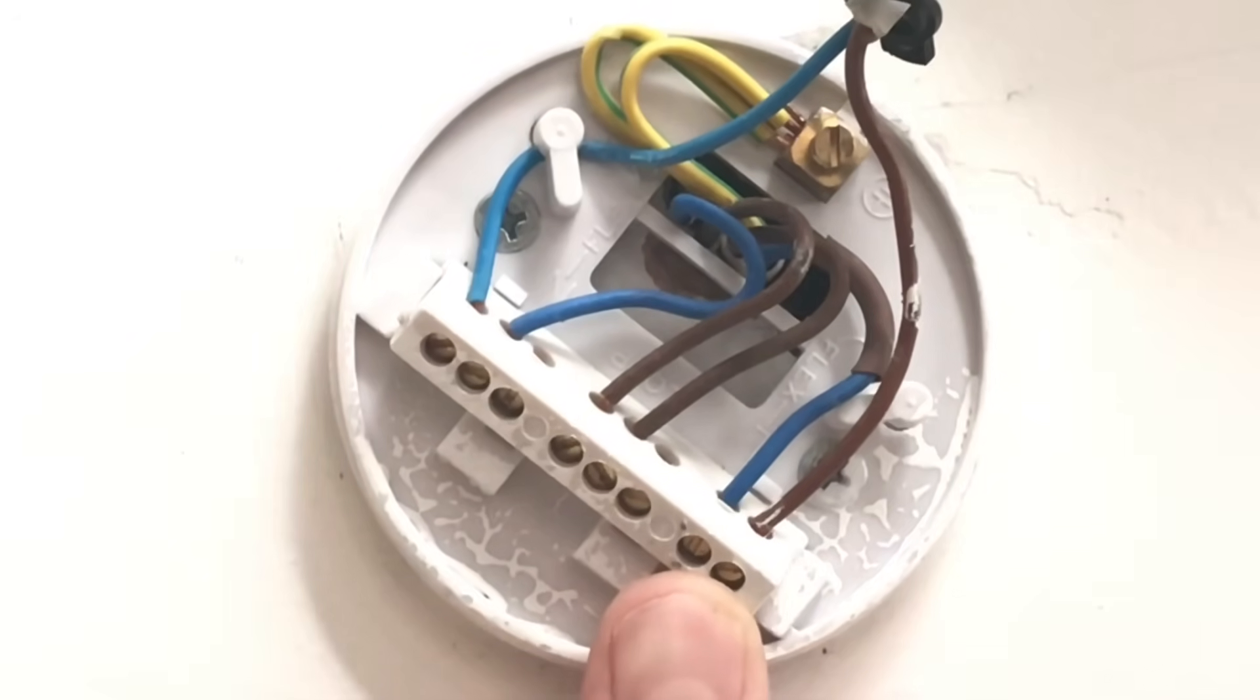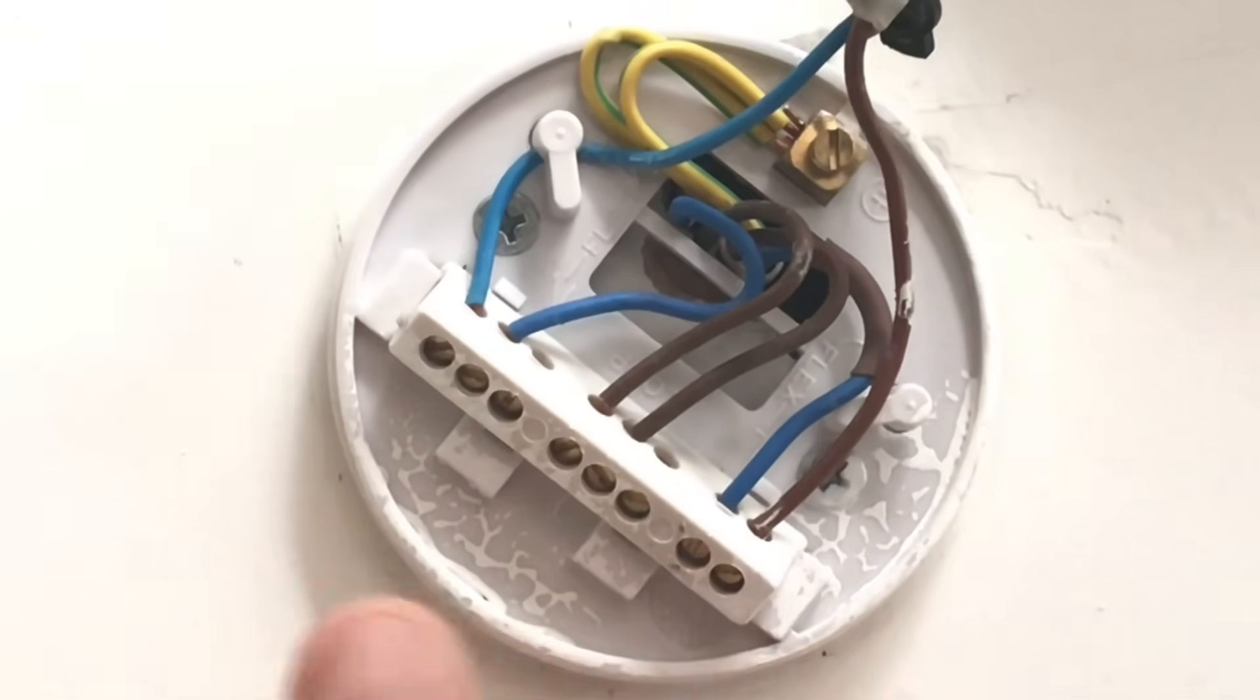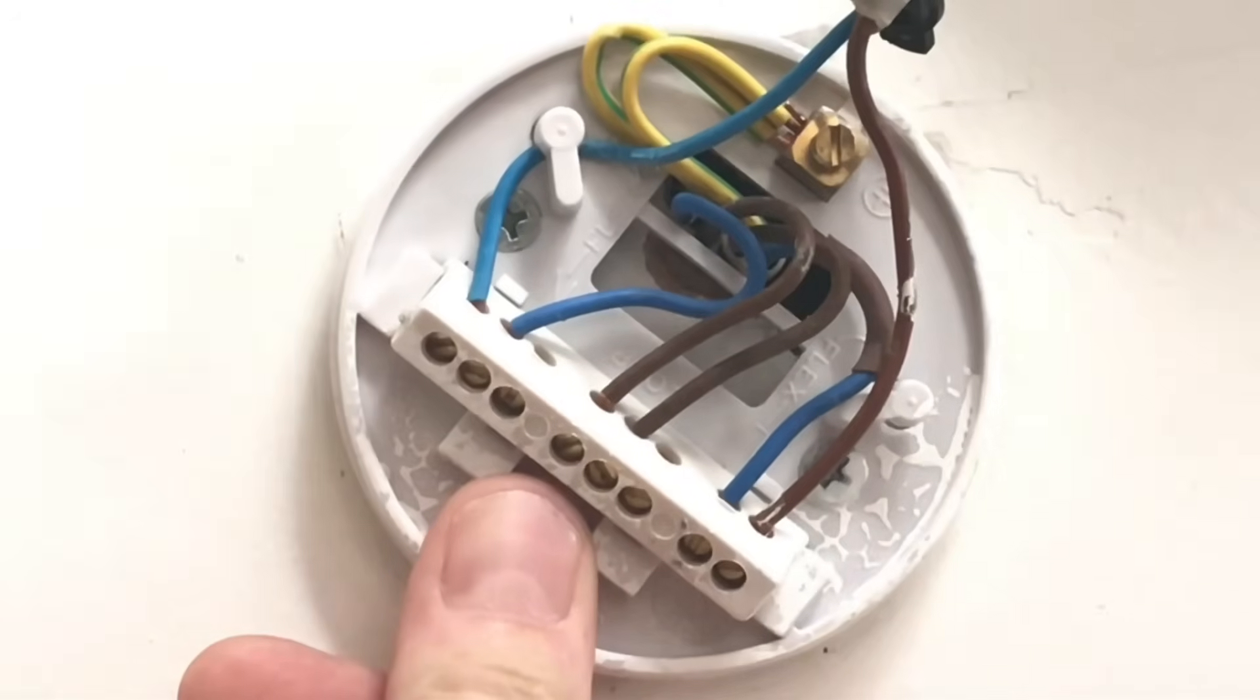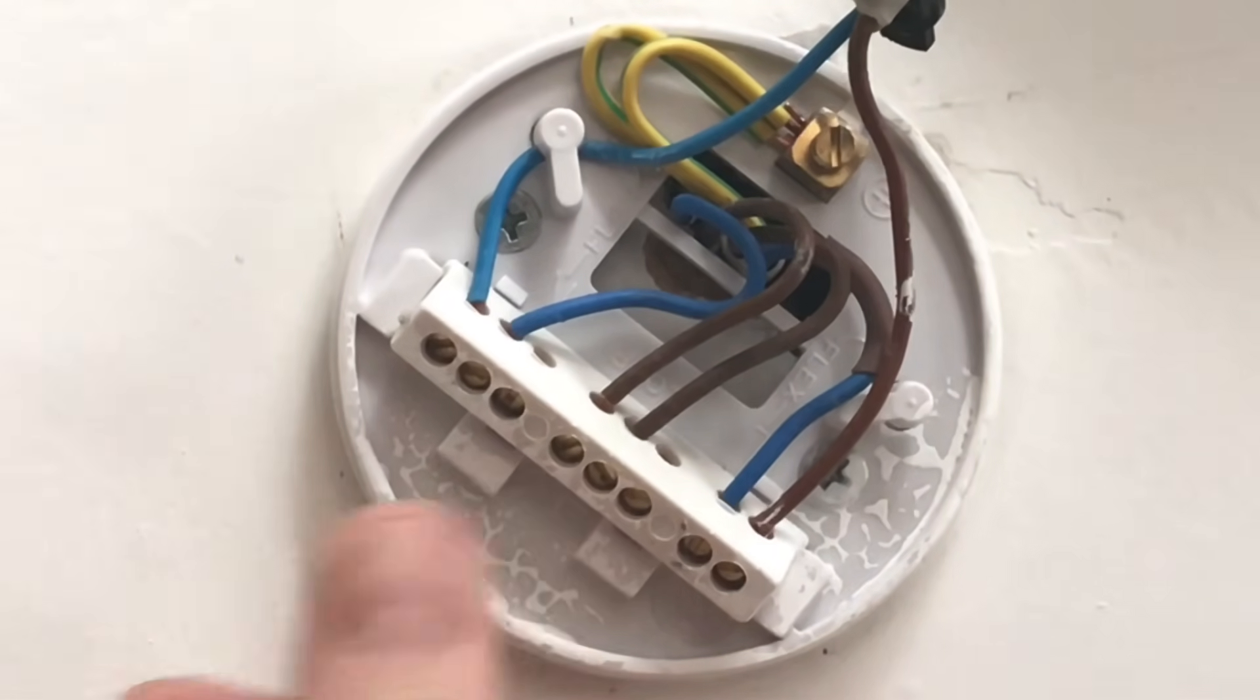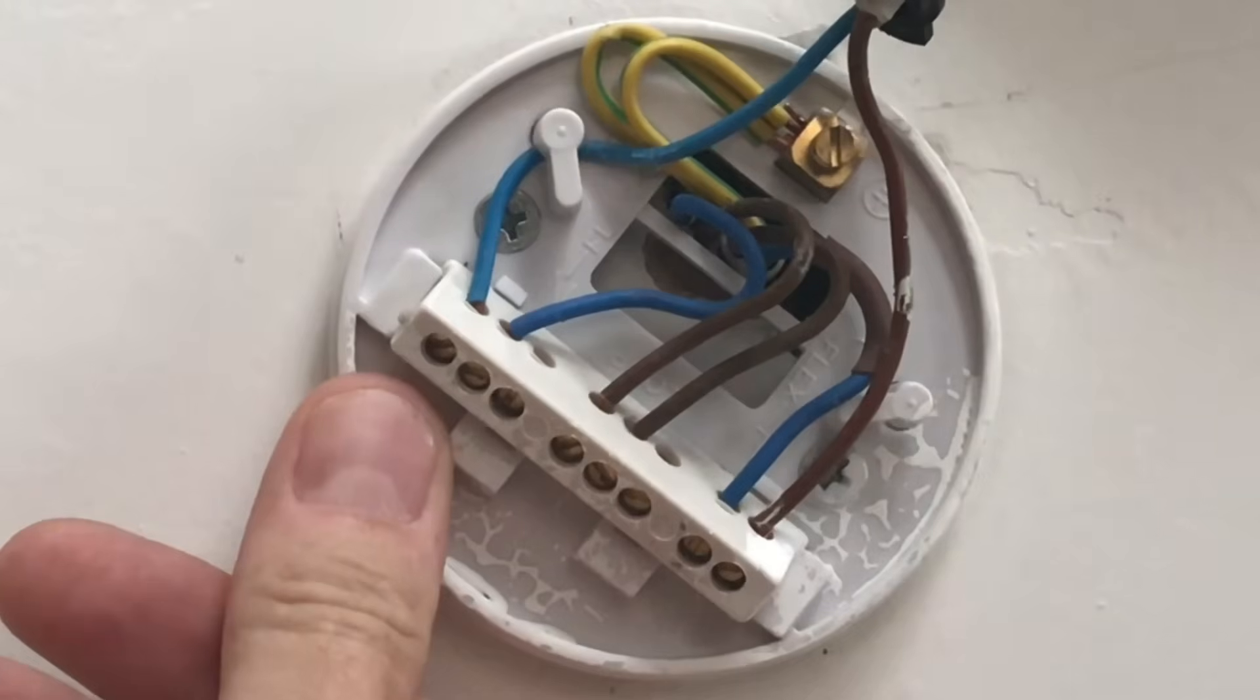We still have the same arrangements of a set of two for switching lines, a set of two connections here for switching line, a set of three connections for the permanent line in the looping terminal, and three connections here for the neutral to be connected.